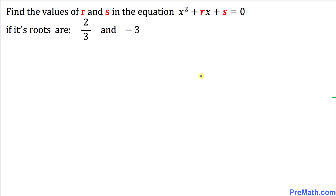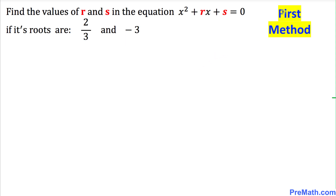Welcome to pre-math. In this video tutorial we are going to find the values of r and s in this given quadratic equation x squared plus rx plus s equal to 0, if its two roots are 2/3 and negative 3. To solve this problem I'm going to show you two different ways, and here's the very first method that we're going to be using.